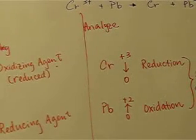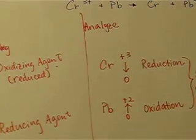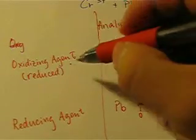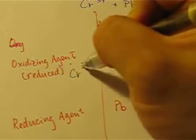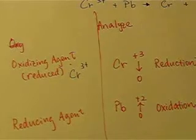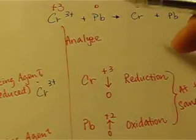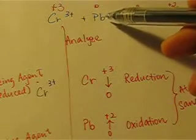In this case, since we know that chromium carries out the reduction, the oxidizing agent in this case is chromium. Chromium 3+ helps another compound or another element to lose electron. And who does it help? Well, from the equation, this is the oxidizing agent. It helps lead to lose electron.